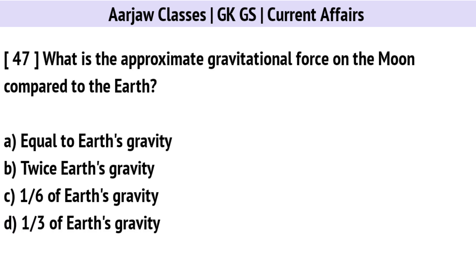What is the approximate gravitational force on the Moon compared to the Earth? Correct option is C: One-sixth of Earth's gravity.